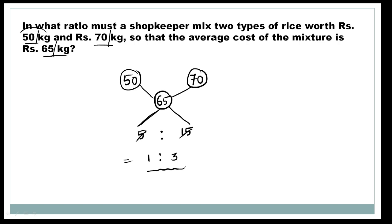So we have 1 part at 50 per kg and 3 parts at 70 per kg, making 4 total parts. For example, with 4 kg at 65 per kg: 1 kg of 50 per kg rice and 3 kg of 70 per kg rice. If we take 2 and 6, the ratio holds the same.